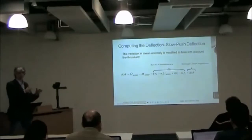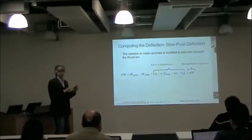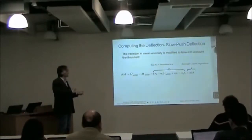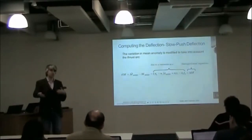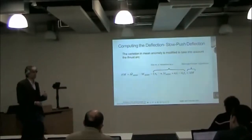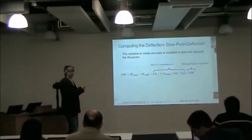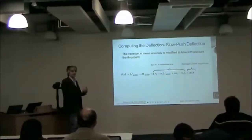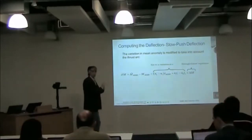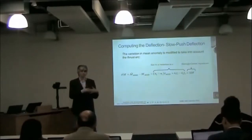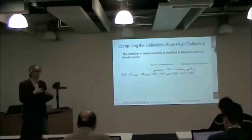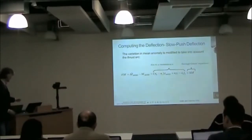In the previous lecture, you saw something very similar but with a transition matrix and Cartesian coordinates. The result is similar because in the end we are always talking about a linear model — this is a formulation in parameters, and before you had a formulation in Cartesian coordinates.